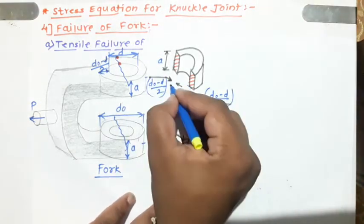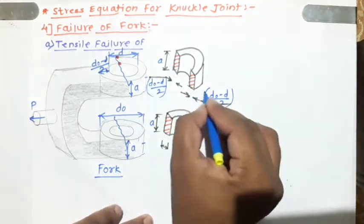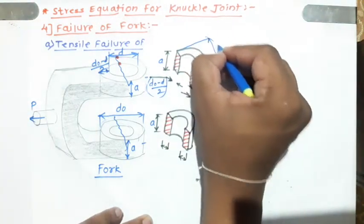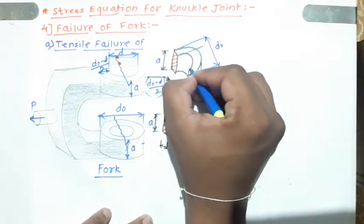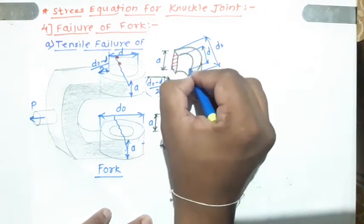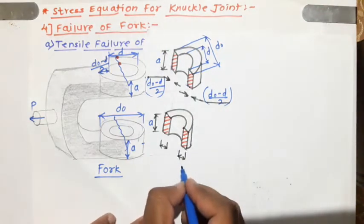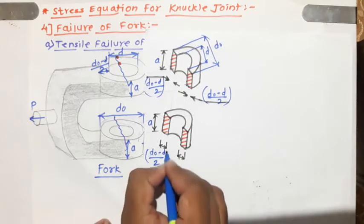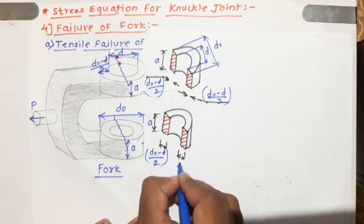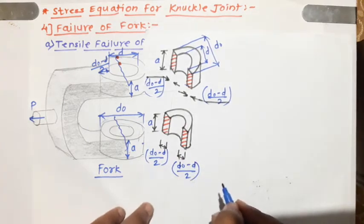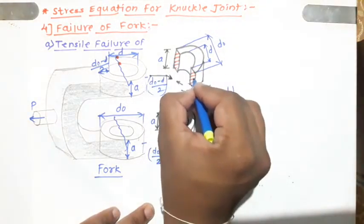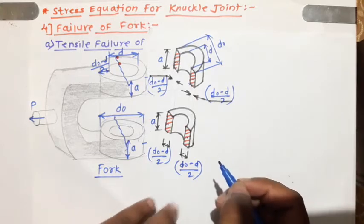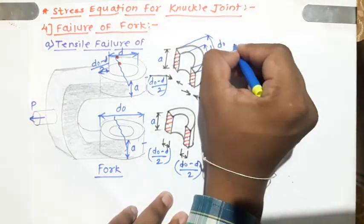So this width of the rectangle is (D_O - d) / 2. The same width applies to all four rectangles. We have four rectangular areas subjected to tensile stress: the first, second, third, and fourth rectangles corresponding to the top and bottom fork ends on each side.